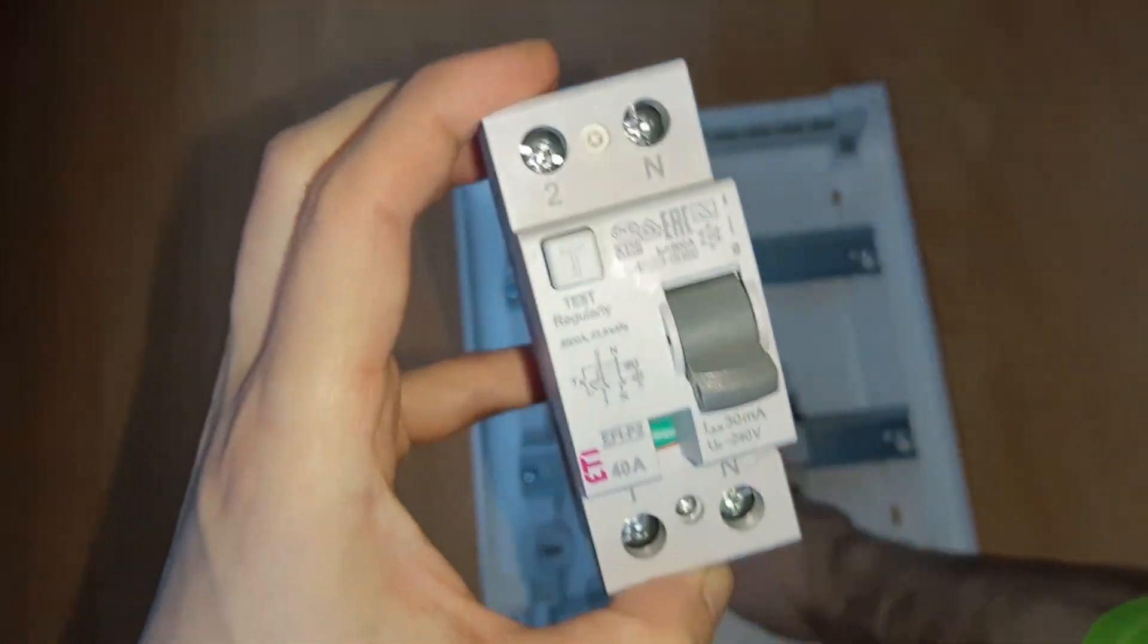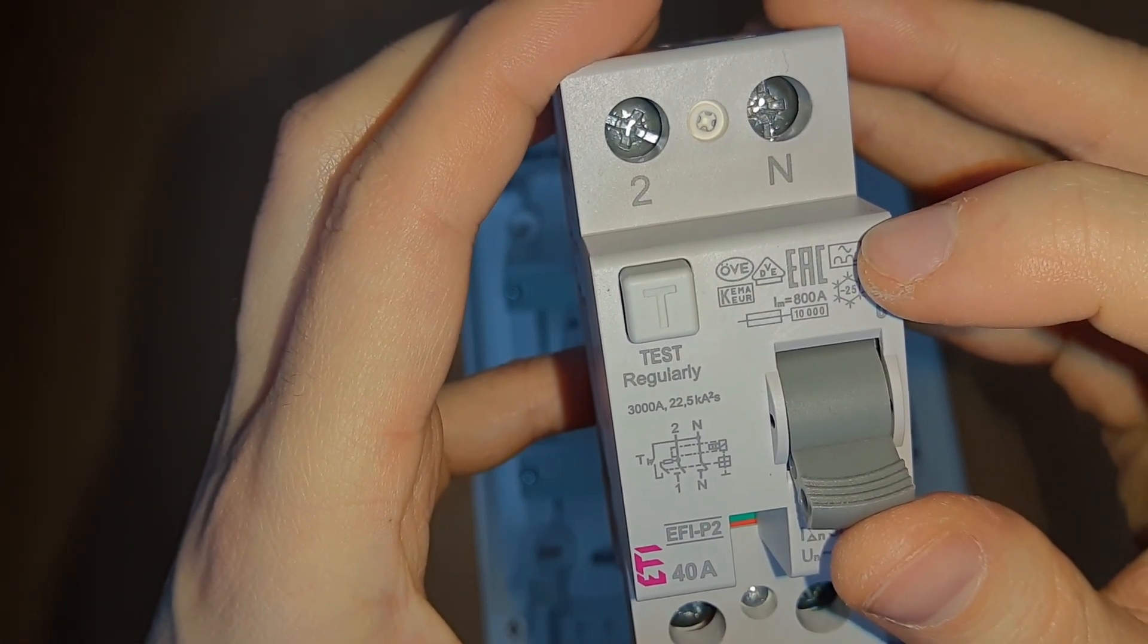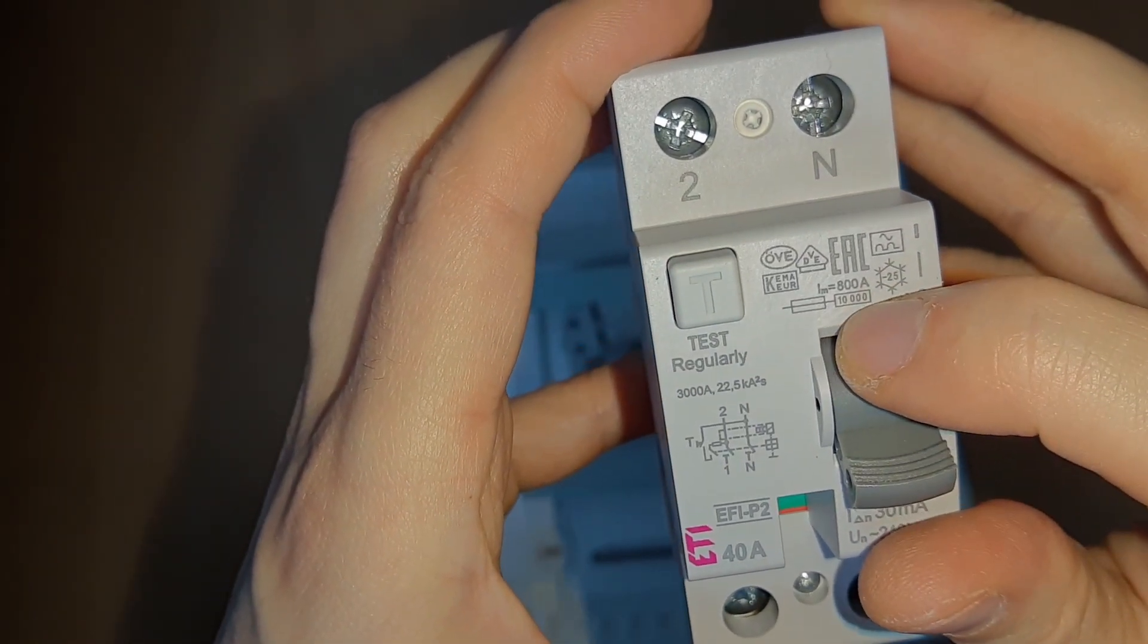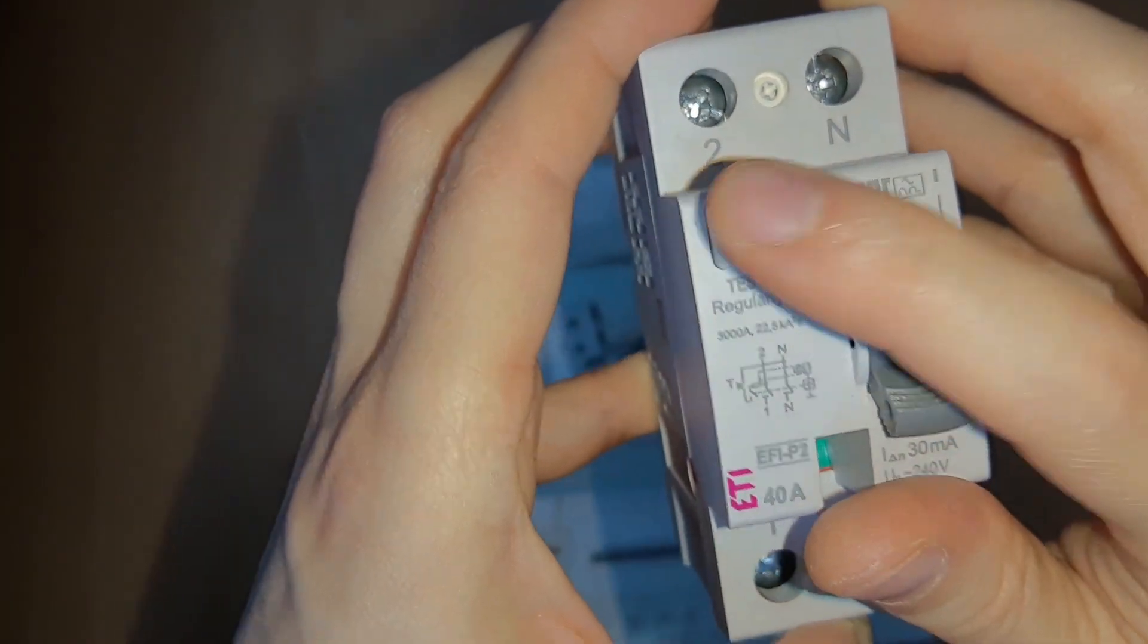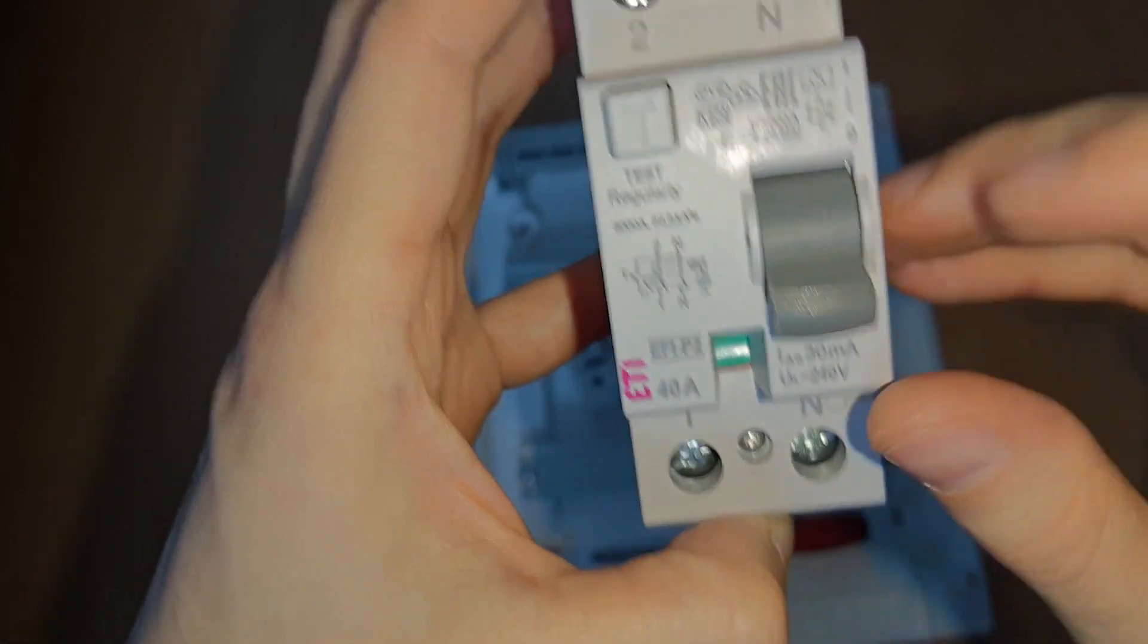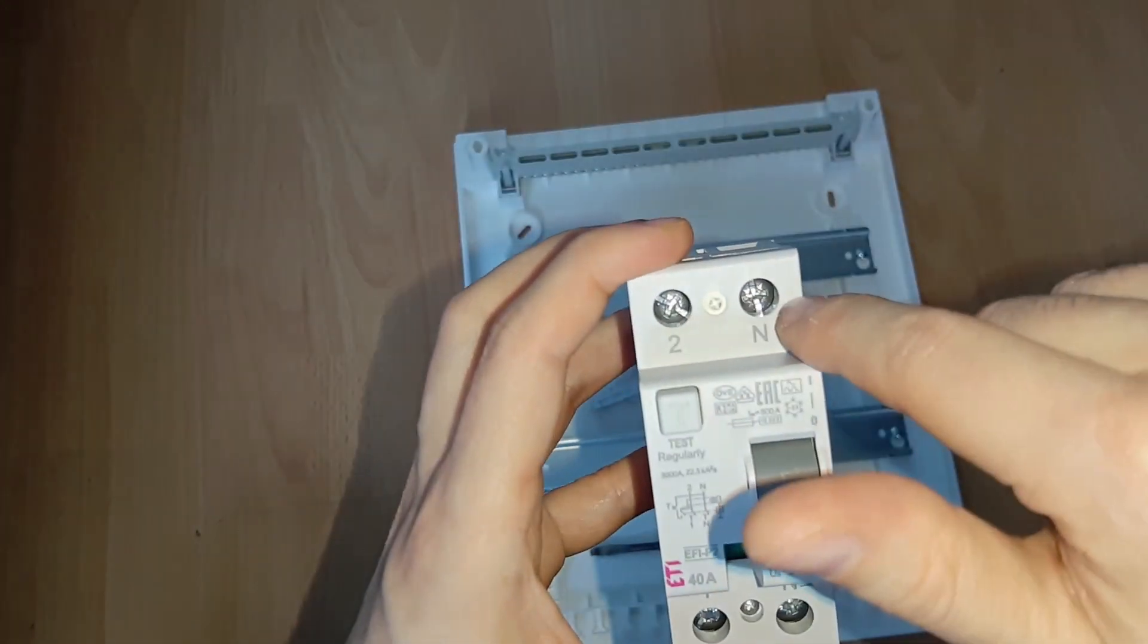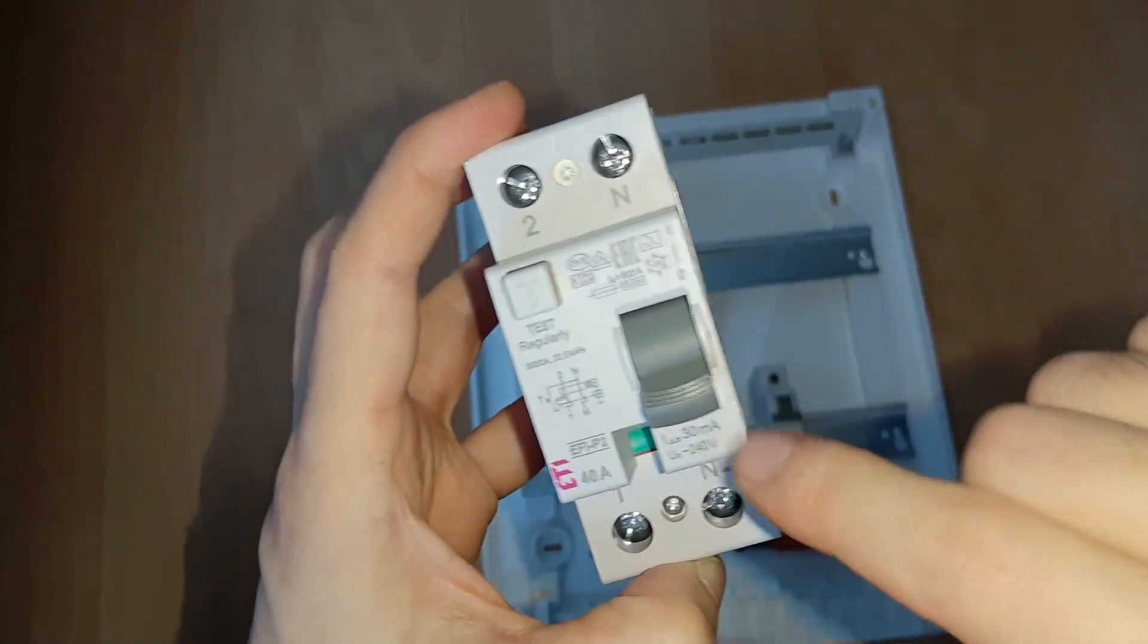It's an A type, so it's both for AC and DC. It's 10 kilo amperes rated, test button, 30 milliamps. I connect it with two wires to the socket. Just make sure you keep the polarity. This one is neutral and this one is phase. I press it and test it, it works.